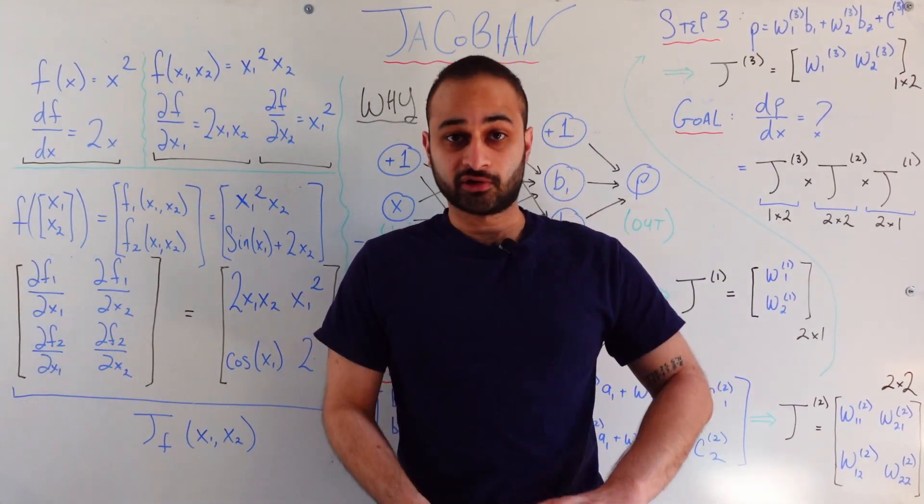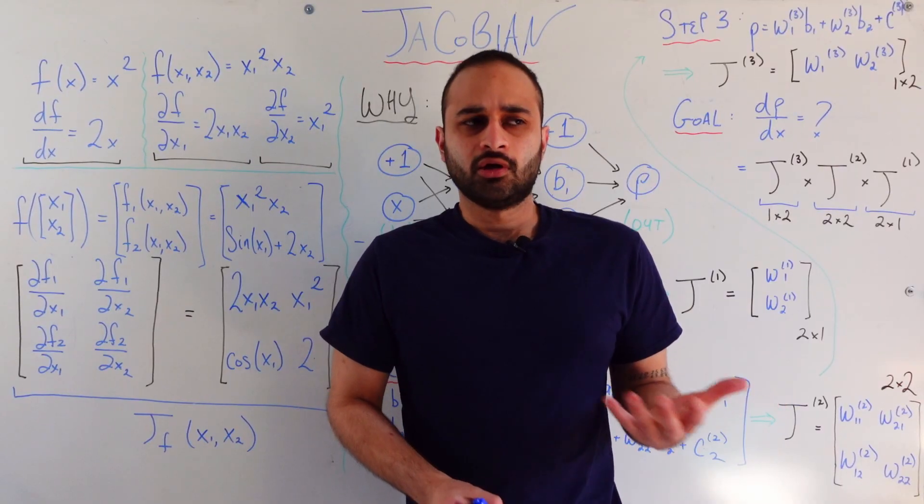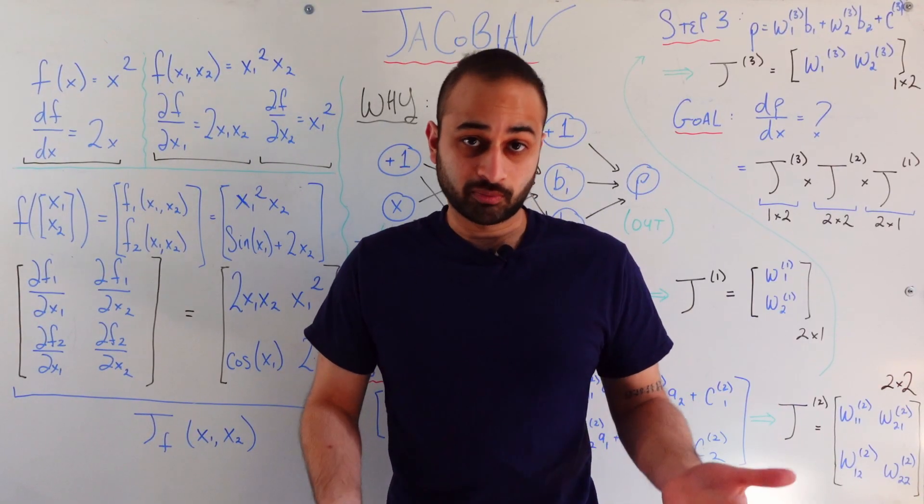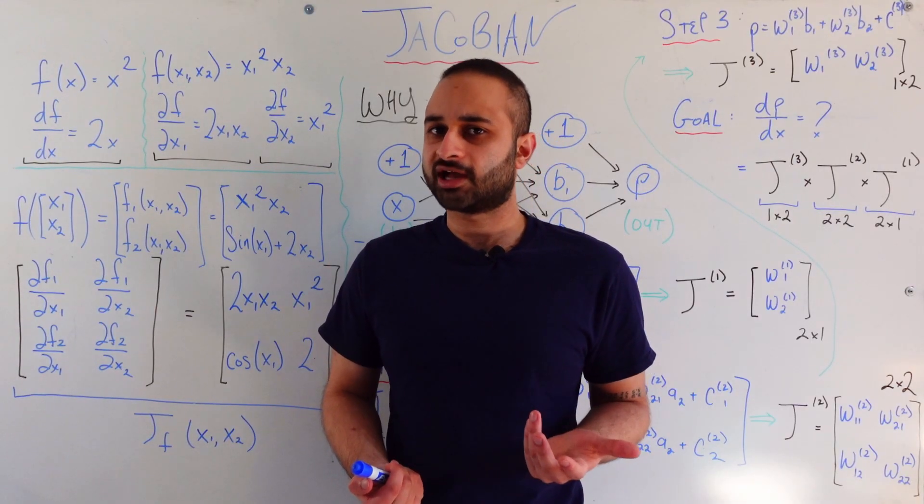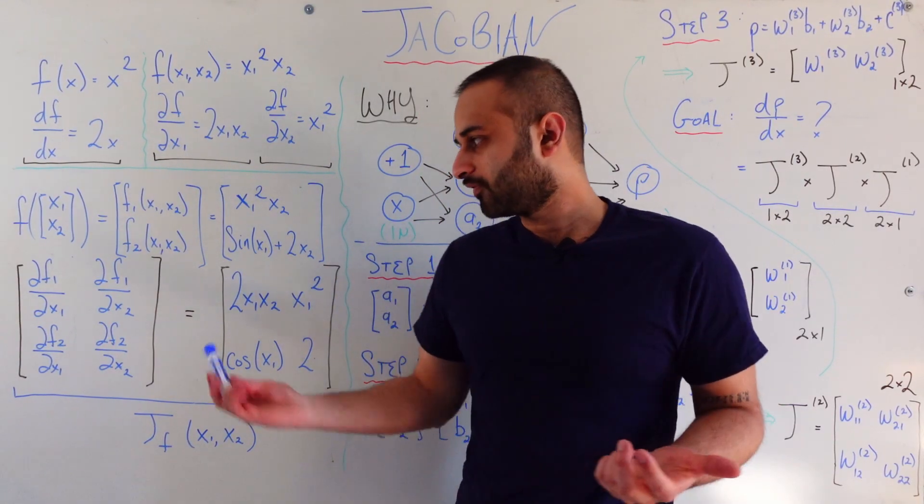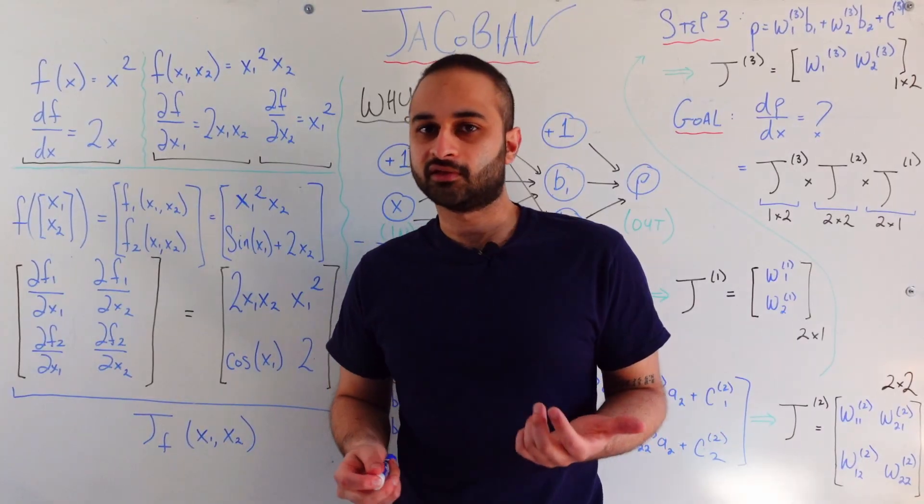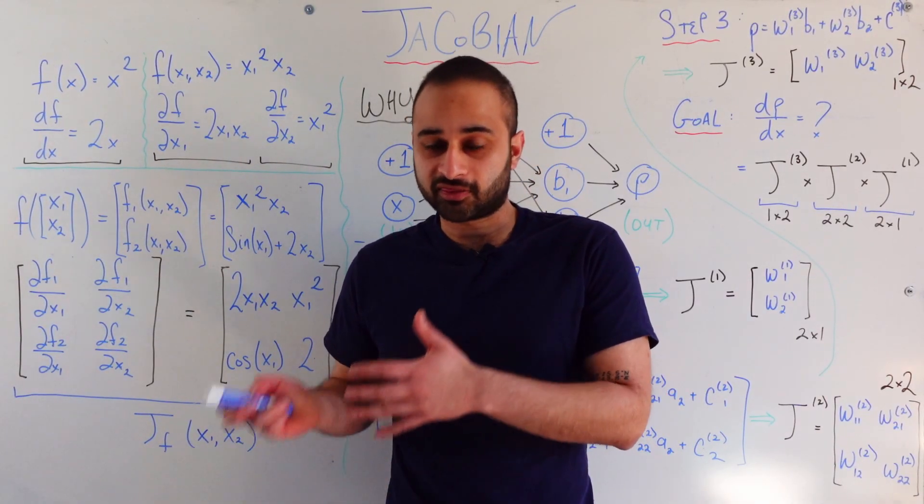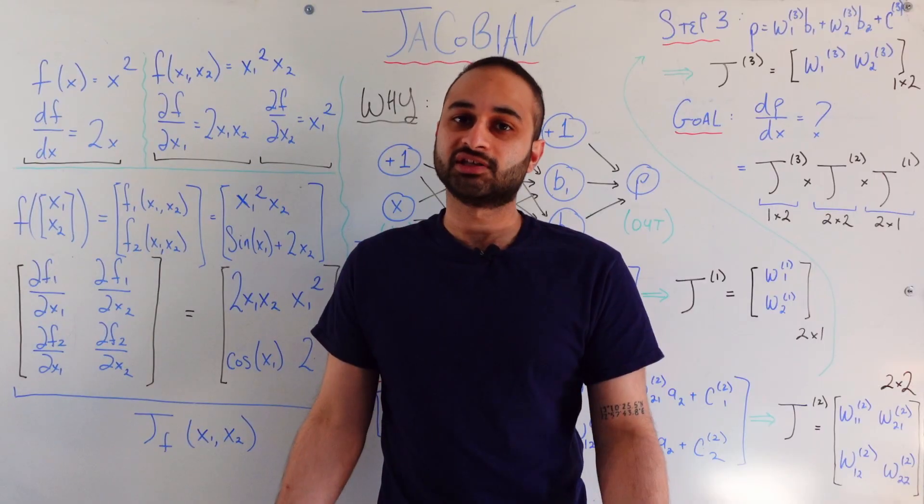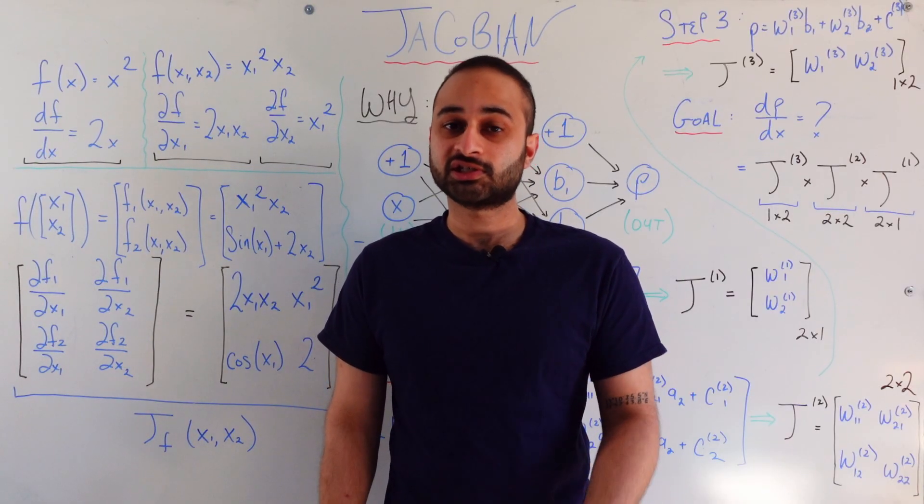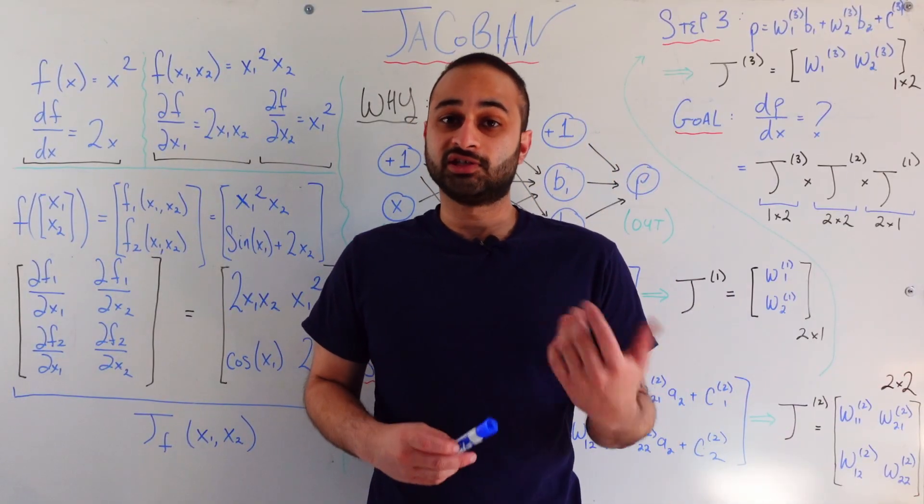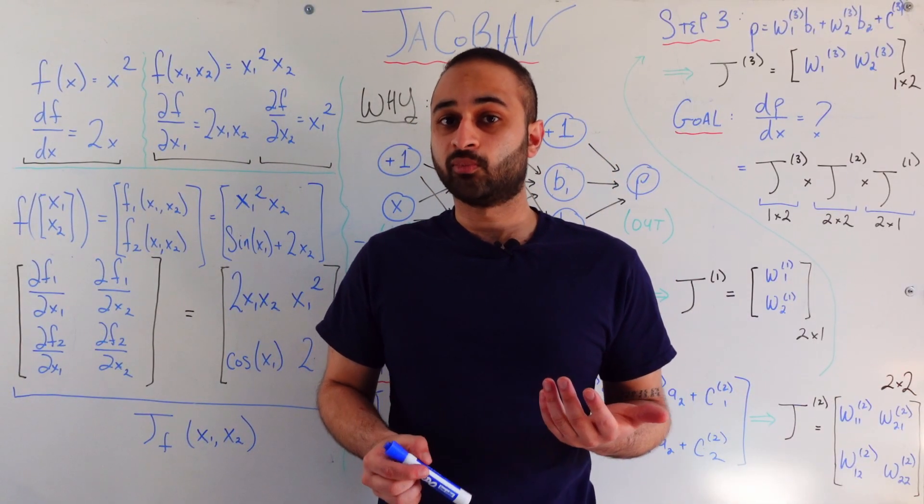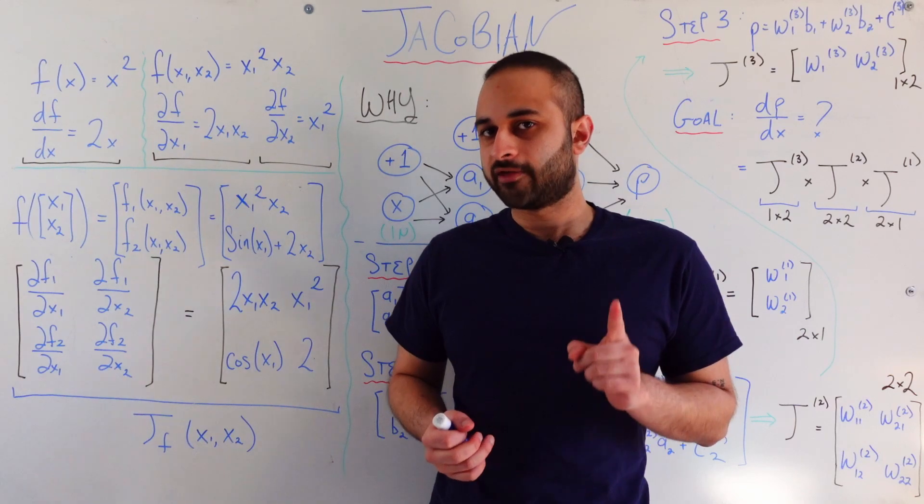Now that we hopefully understand what the Jacobian is, we are going to talk about the most important part of this video which is why is the Jacobian useful in data science or stats. Of course it's cool to look at these things but I personally don't think that there is any value if it's purely theoretical. I think that it needs to be used for something in data science. So what is it used for in data science? The best example and the most buzz wordy one I could think of is in the context of neural networks where it's pretty important.